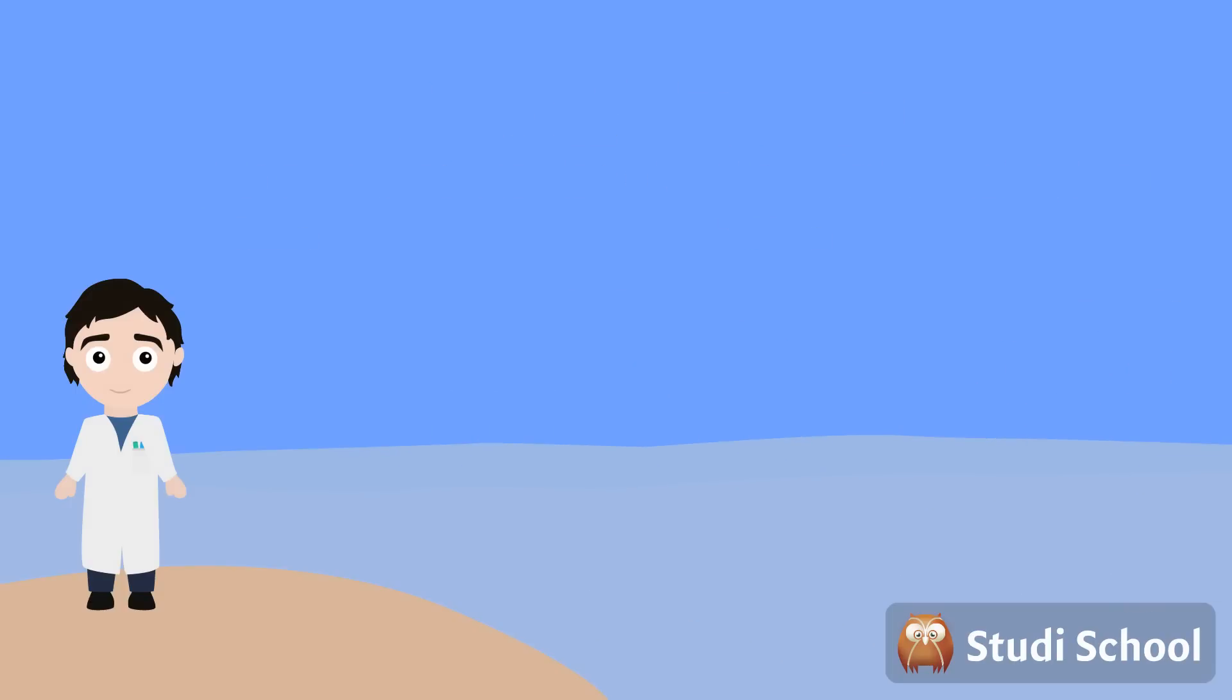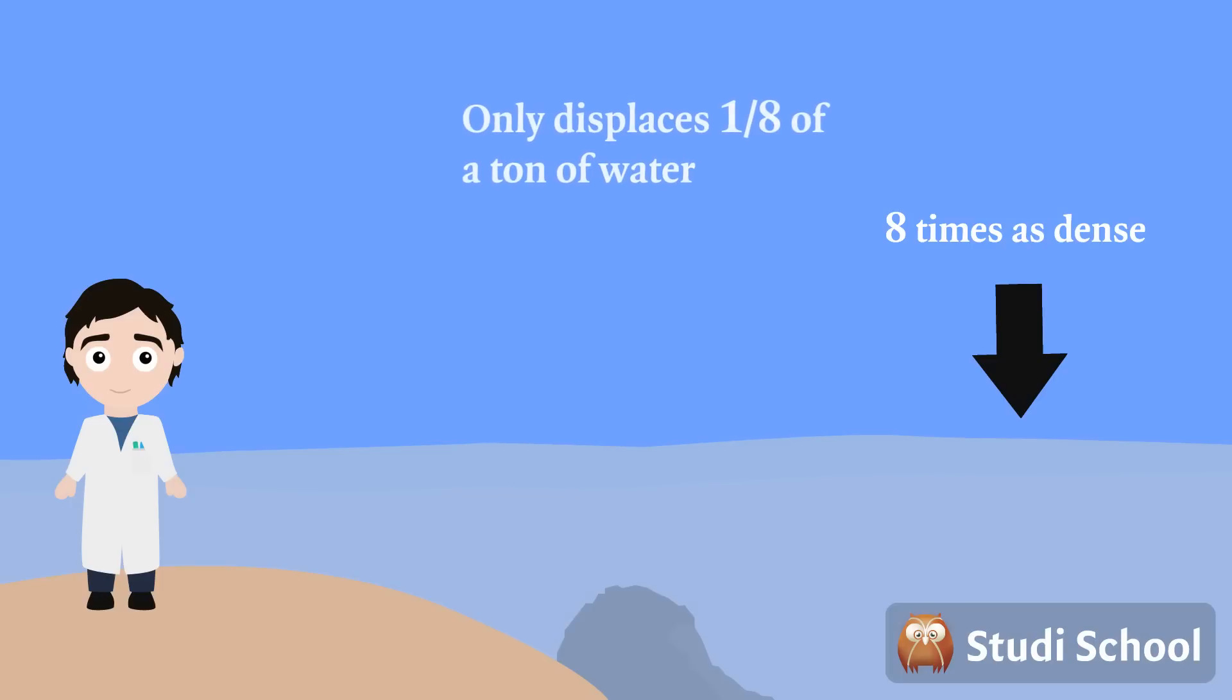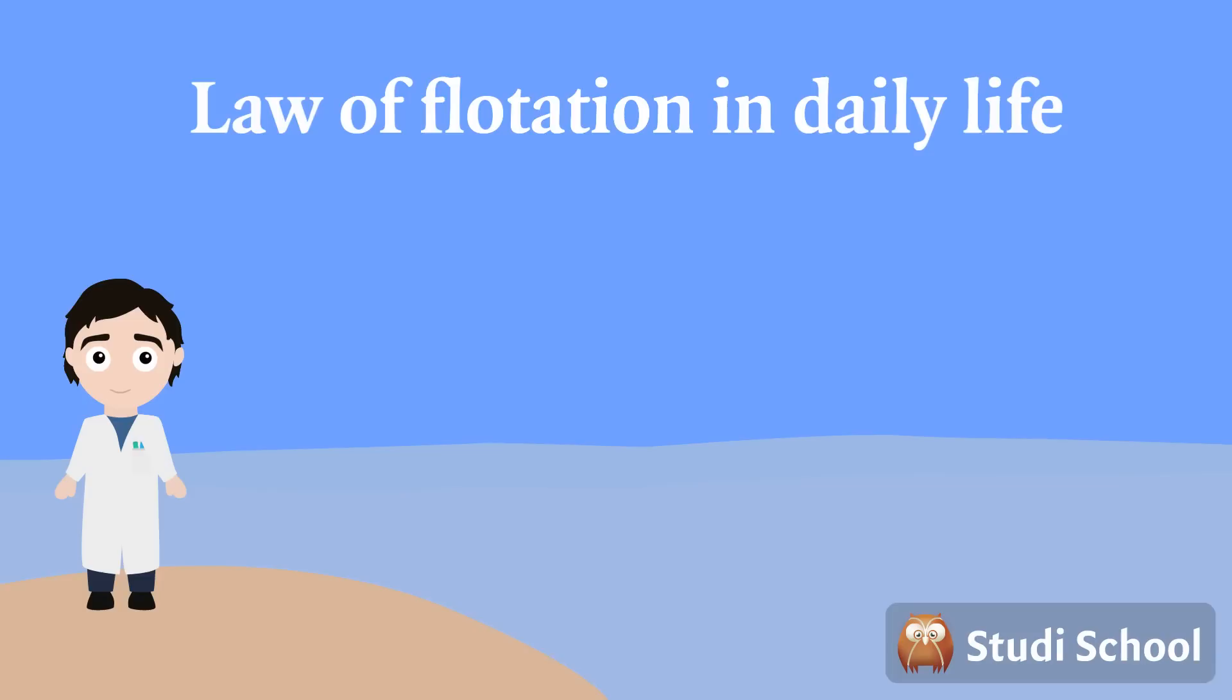For example, let's take a one-ton block of solid iron. Iron is nearly eight times as dense as water, which means that when submerged, it only displaces one-eighth of a ton of water. Therefore, it cannot float because its density is much higher than water. Let's look at two examples of this law in daily life.